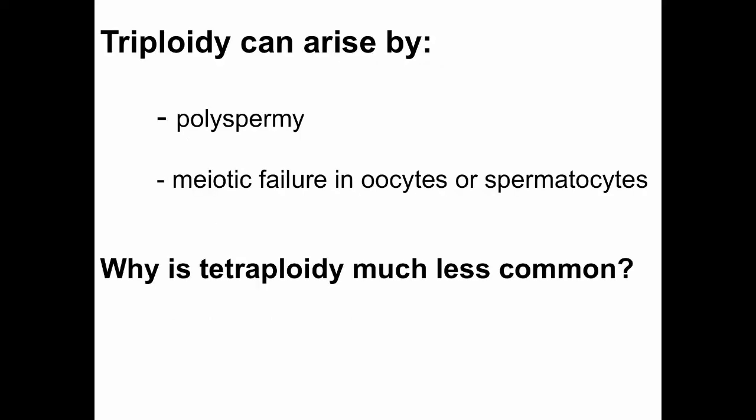Potentially by polyspermy. You may also have meiotic failure in oocytes or spermatocytes. Why would tetraploidy be much less common? Well, you'd have to think about it and say you've got two independent abnormalities occurring, both on the male side and the female side, so it's really very, very rare.